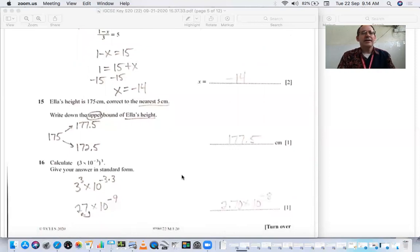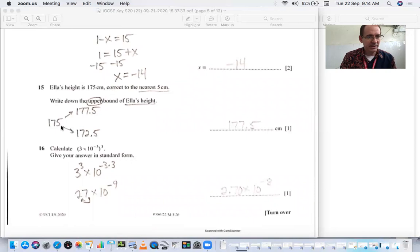Number 15, Ella's height is 175 centimeters correct to the nearest 5 centimeters. This one's a little tricky because normally it's correct to the nearest centimeter. But this says correct to the nearest 5 centimeters. So you need to divide that in half and add or subtract it. So 175 becomes 172.5 or 177.5. Since this is looking for the upper boundary, it's the 177.5.